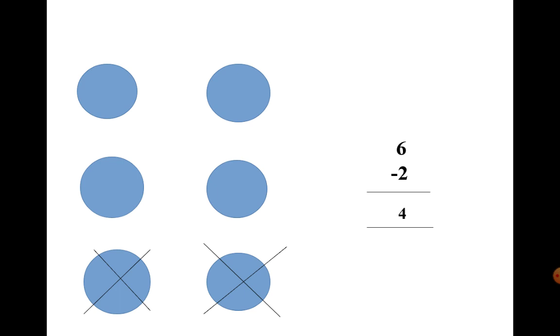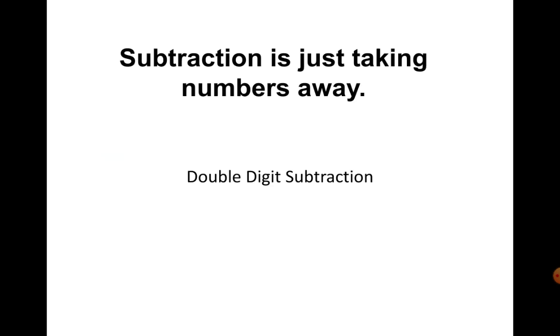Let's say I have 6 dots and I removed 2 dots away. I can write it as 6 minus 2. How many dots do I have if I take 2 dots away? Yes, the answer is 4. I have 4 dots now. Subtraction is just taking numbers away.